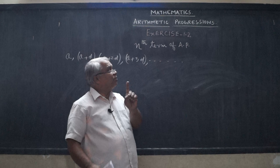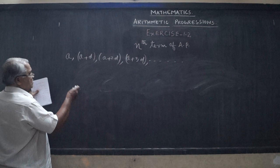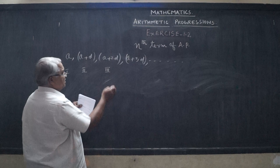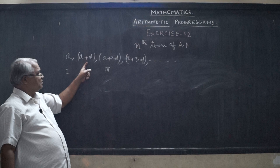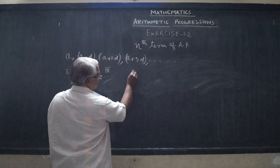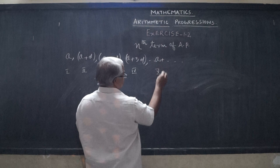Today's topic is the nth term of AP. The first term is a, which equals a plus 1 minus 1 times d. The second term is a plus 1d, and the third term is a plus 2d. Notice: for the 2nd term, 2 minus 1 gives 1; for the 3rd term, 3 minus 1 gives 2; for the 4th term, 4 minus 1 gives 3. So the 5th term is a plus 4d.